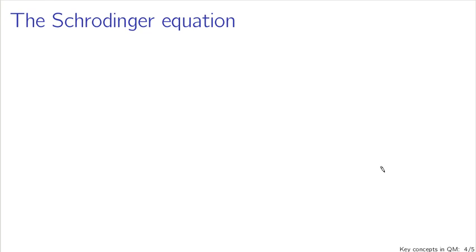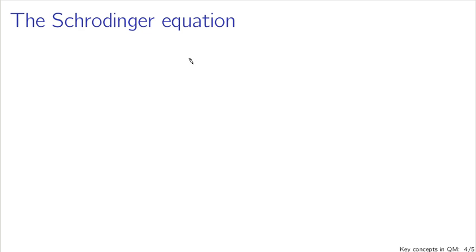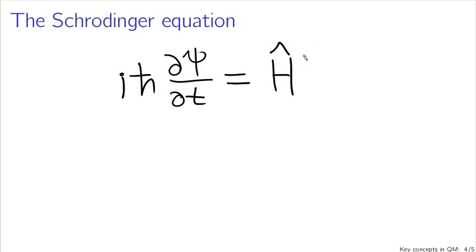The final key concept in quantum mechanics is the Schrodinger equation. And this is really the big equation, so I'll write it big. i h bar partial derivative of psi with respect to time is equal to H hat, that's an operator, acting on psi. Now H hat here is the Hamiltonian, which you can think of as the energy operator.